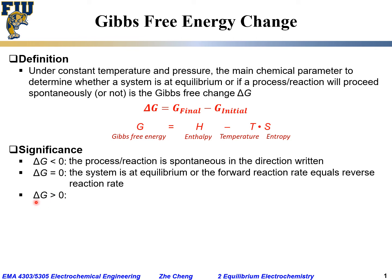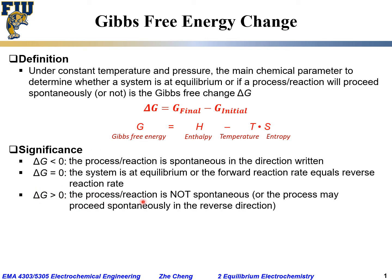A third scenario is when delta G is greater than zero — the Gibbs free energy change is positive — which means the final state is at an energy state higher than the initial state. In that case, the process is not spontaneous. You need to supply extra energy for the process to happen. Or put it another way, the process may proceed spontaneously in the reverse direction.